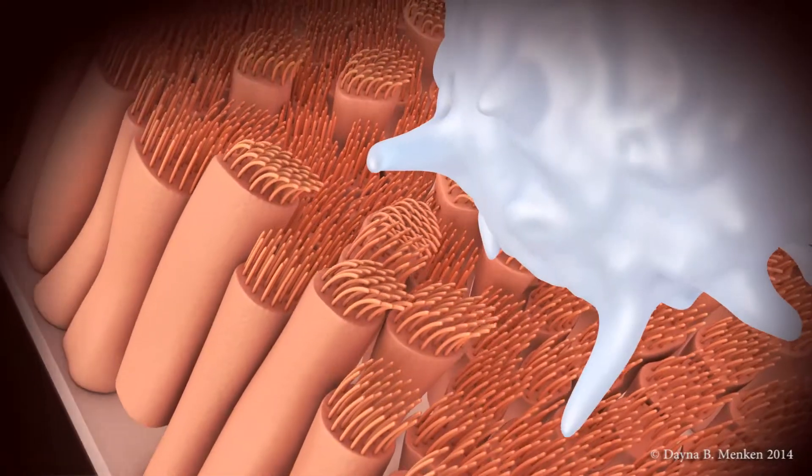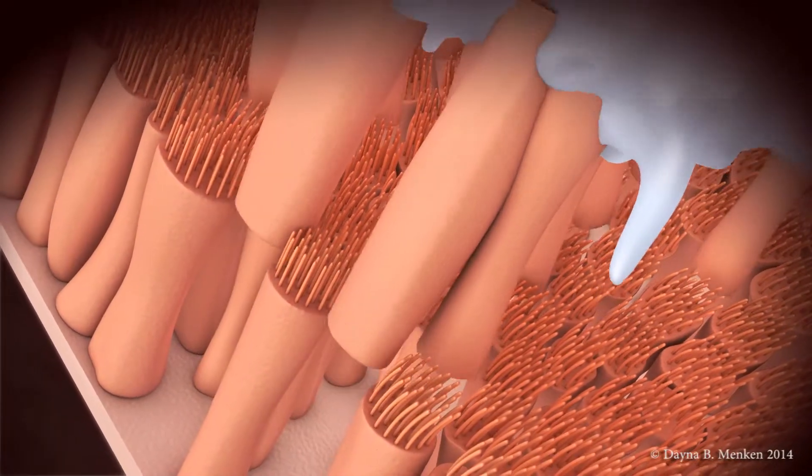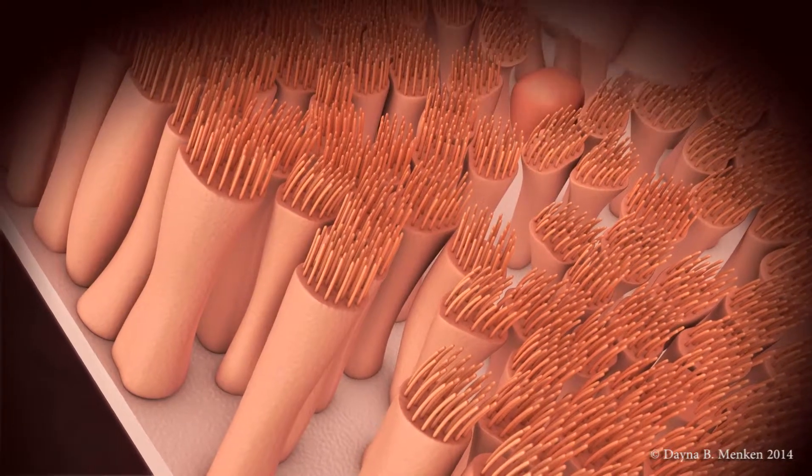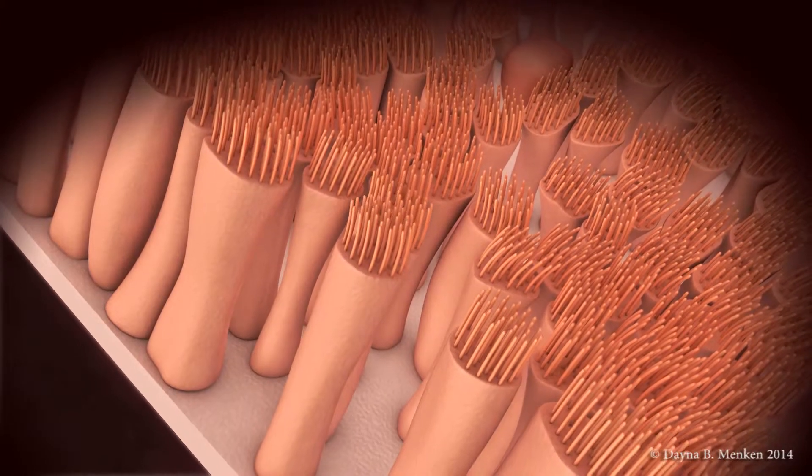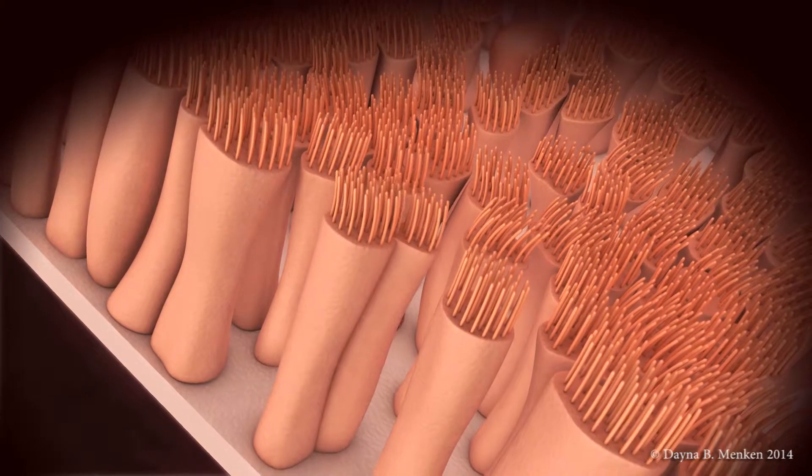The process of repair begins when damaged epithelial cells detach from the rest of the lung tissue and are cleared away. After the old cells are removed, the undamaged cells nearby help to temporarily fill the gaps.